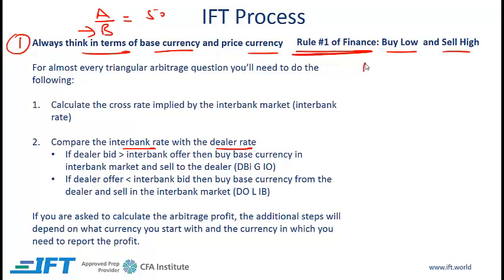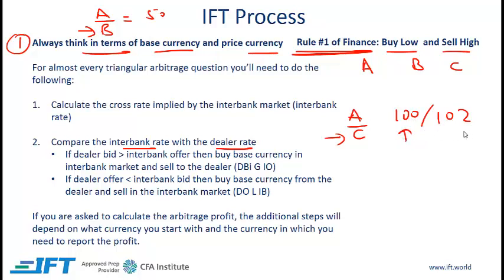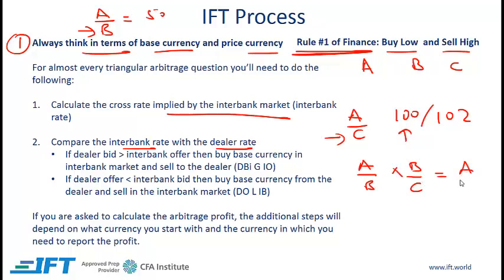Let me give a simple example. Say we are dealing with three currencies A, B, and C, and you are given a dealer rate for A over C where C is the base currency, A is the price currency, and the dealer rate is 100/102 — so the bid is 100 and the offer is 102. We are also given the interbank rates for A/B and B/C. We calculate the implied interbank rate by multiplying these two: A over B times B over C gives us A over C.